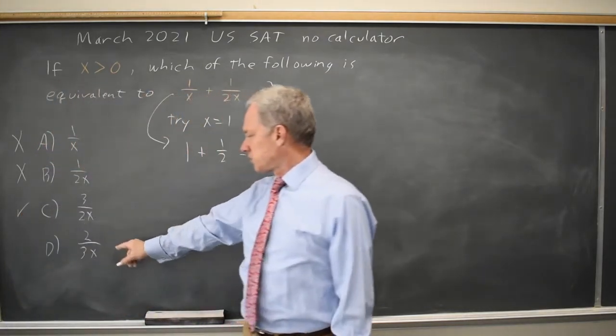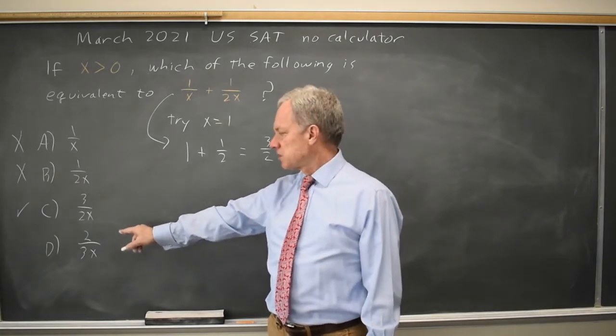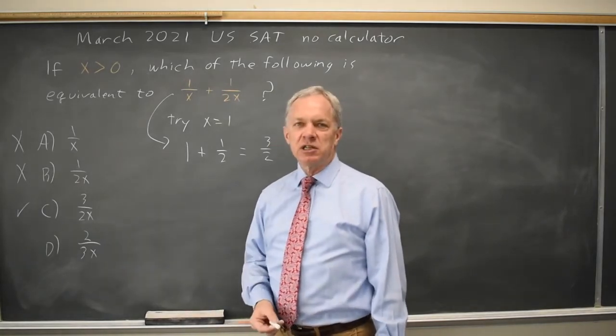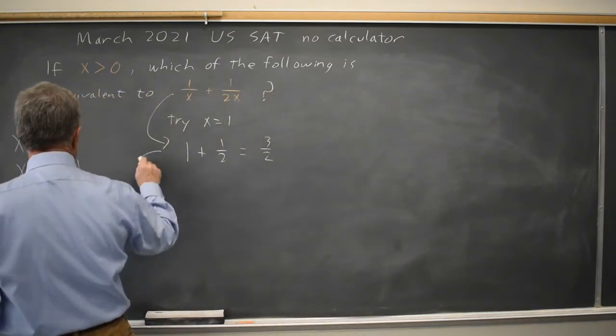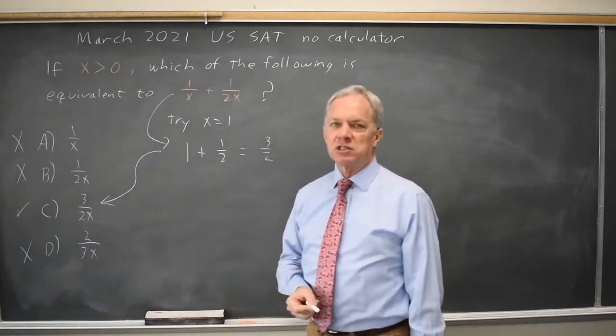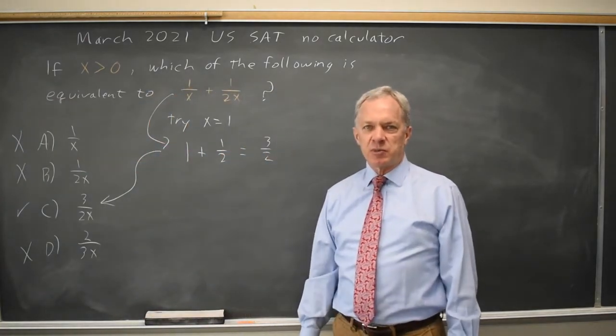But I have to check choice D to see if that also matches, but it doesn't. That's 2 over 3 times 1 is 2 thirds, which does not match 3 halves.